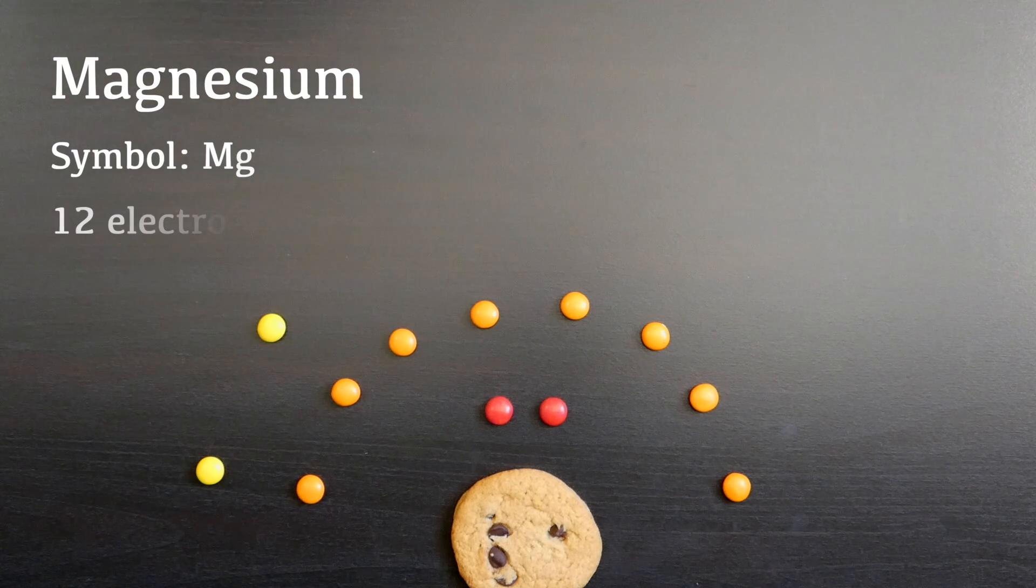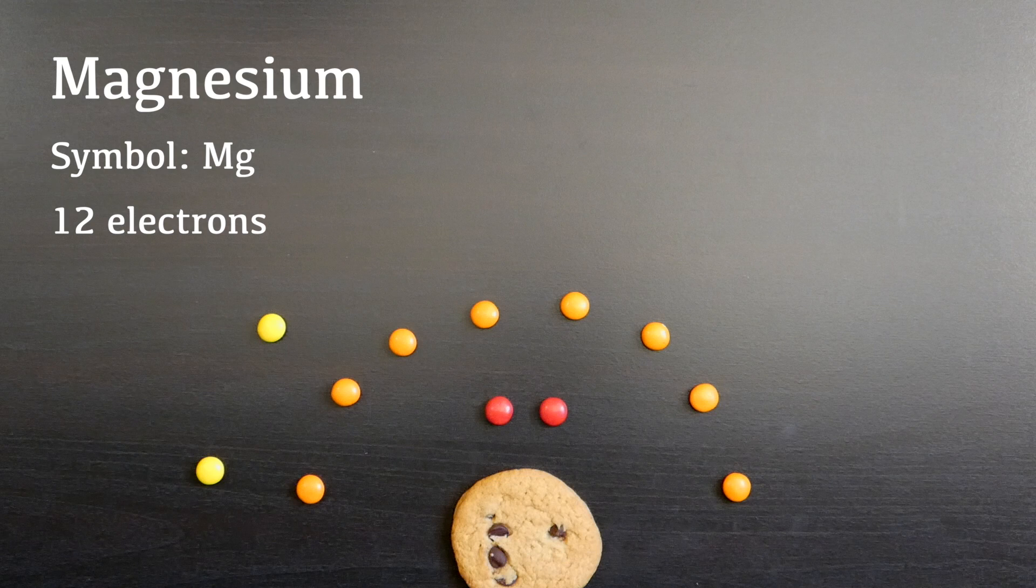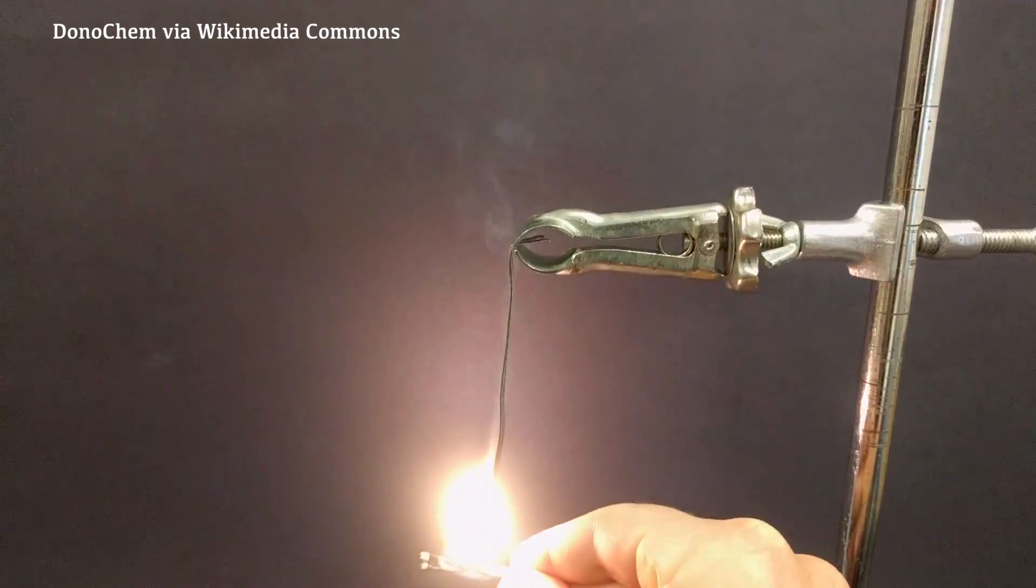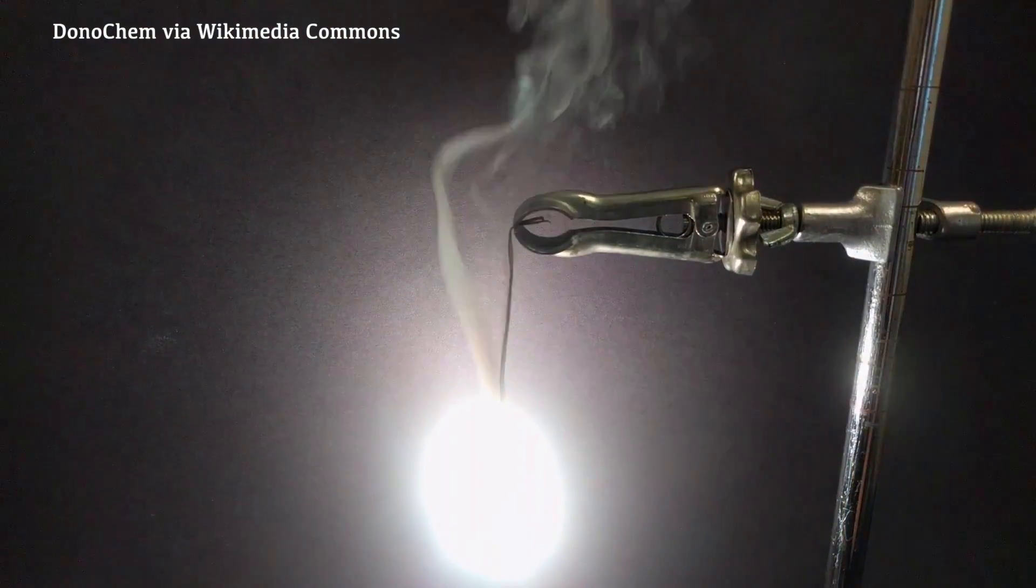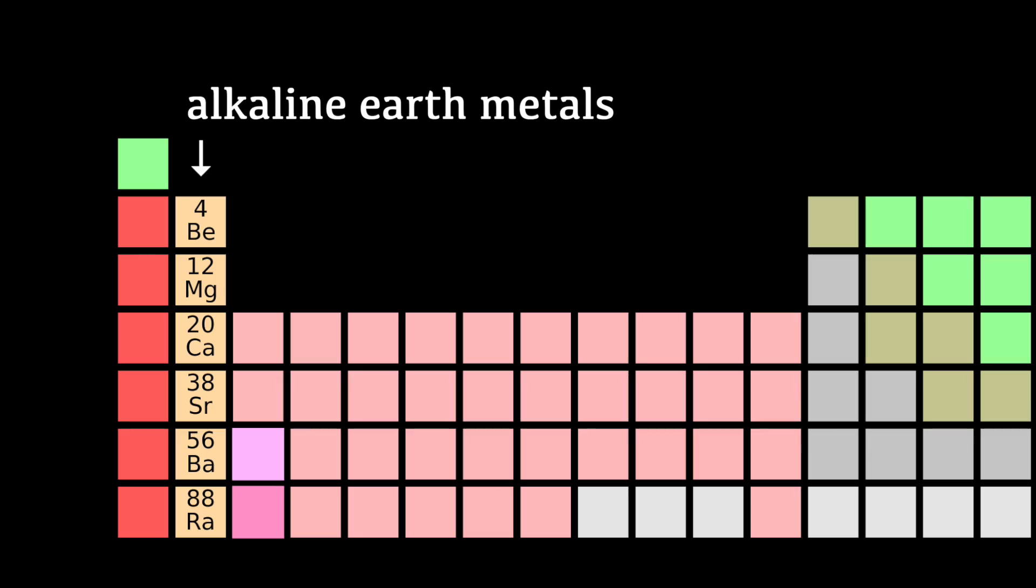Element number 12 is magnesium, which is well known for being soft and flammable. It burns with a stunning white light. Along with beryllium and the elements below it on the periodic table, magnesium forms a group called the alkaline earth metals.